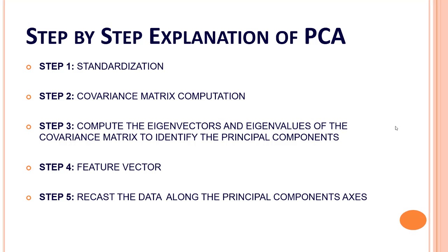Before going into the steps, you should know about a few terms which are quite necessary. One is dimension — we have already heard about dimension, which means the number of features. Then correlation — we have talked about correlation in the course, that is how strongly two variables are related to each other: if one decreases, the other increases or decreases. We have different kinds of correlation; we have looked into Pearson correlation before.